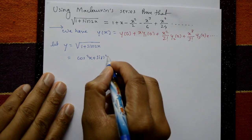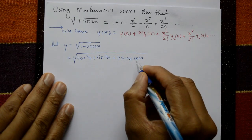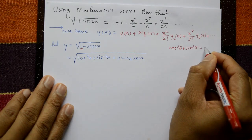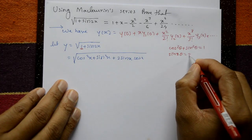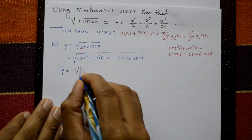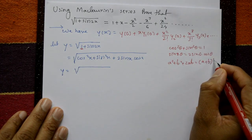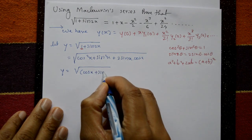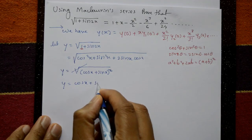Simplify: 1 + sin 2x = cos²x + sin²x + 2 sin x cos x, using the identity cos²θ + sin²θ = 1 and sin 2θ = 2 sin θ cos θ. This equals (cos x + sin x)². Therefore y = √((cos x + sin x)²) = cos x + sin x.